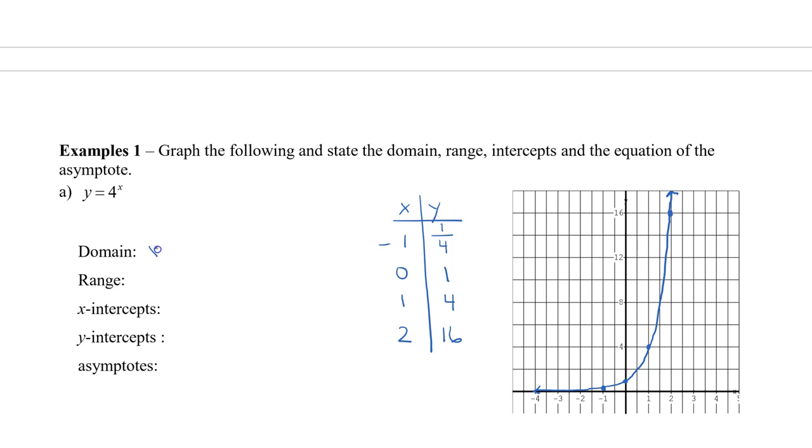So the domain is all real numbers. The range is greater than 0. X-intercepts, there are none. We can see that it hits the y-axis at 0, 1. And there's one asymptote, y equals 0, which is, again, this line over here.